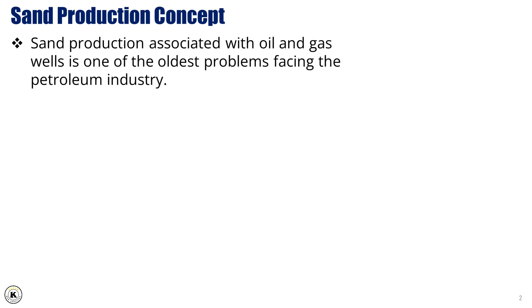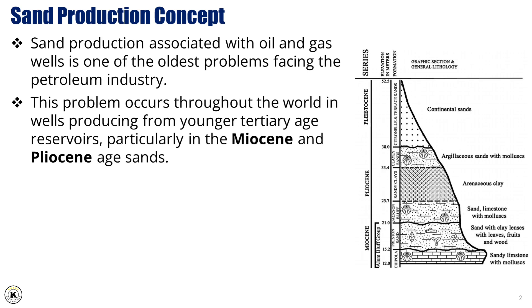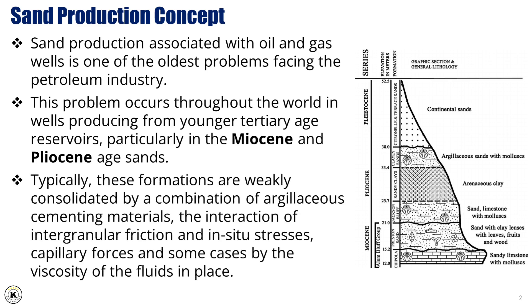Sand production concept. Sand production associated with oil and gas wells is one of the oldest problems facing the petroleum industry. This problem occurs throughout the world in wells producing from younger tertiary age reservoirs, particularly in the Miocene and Pliocene age sands. Typically, these formations are weakly consolidated by a combination of argillaceous cementing materials, intergranular friction, insidious stresses, capillary forces, and in some cases the viscosity of the fluids in place.